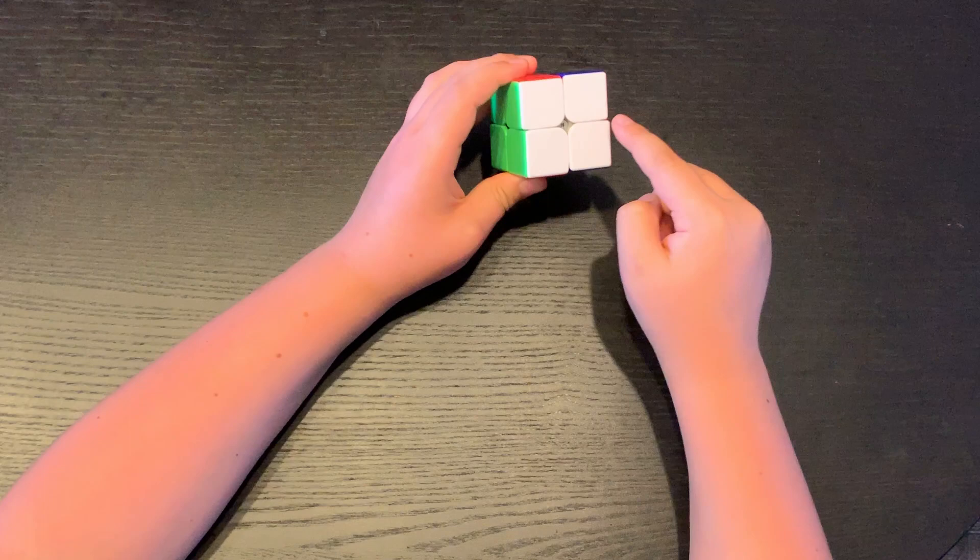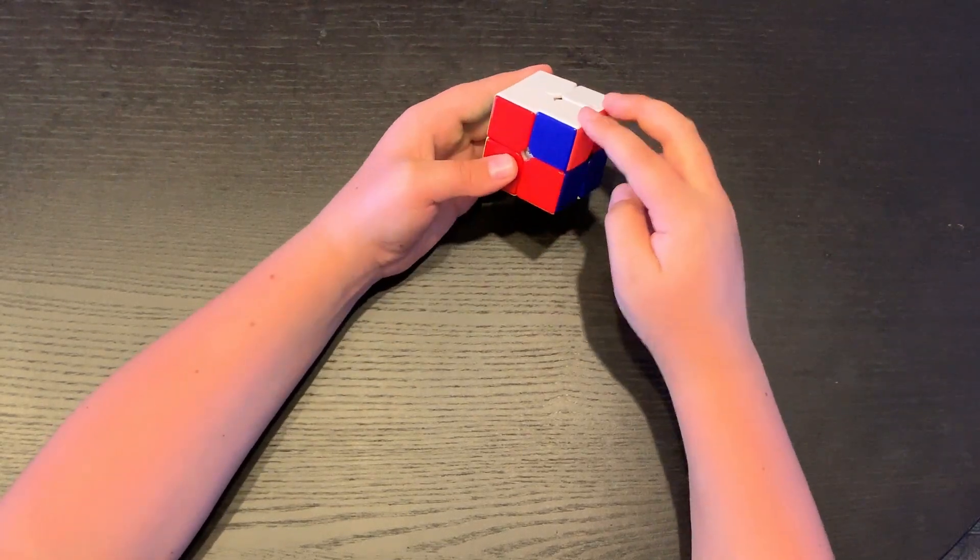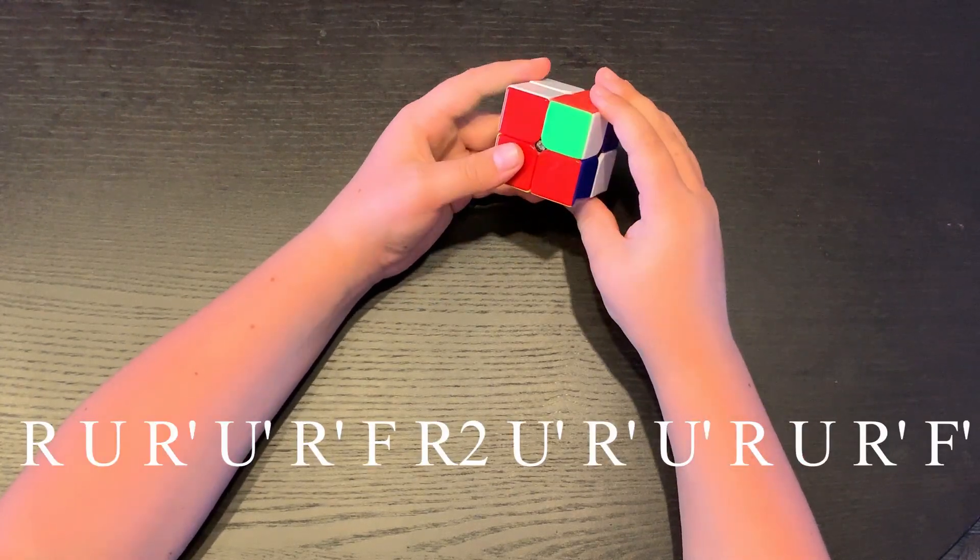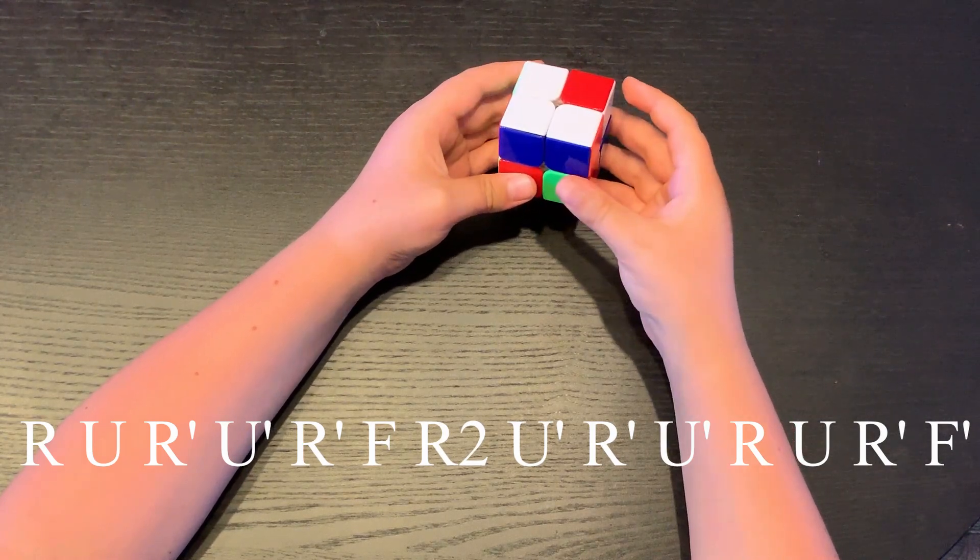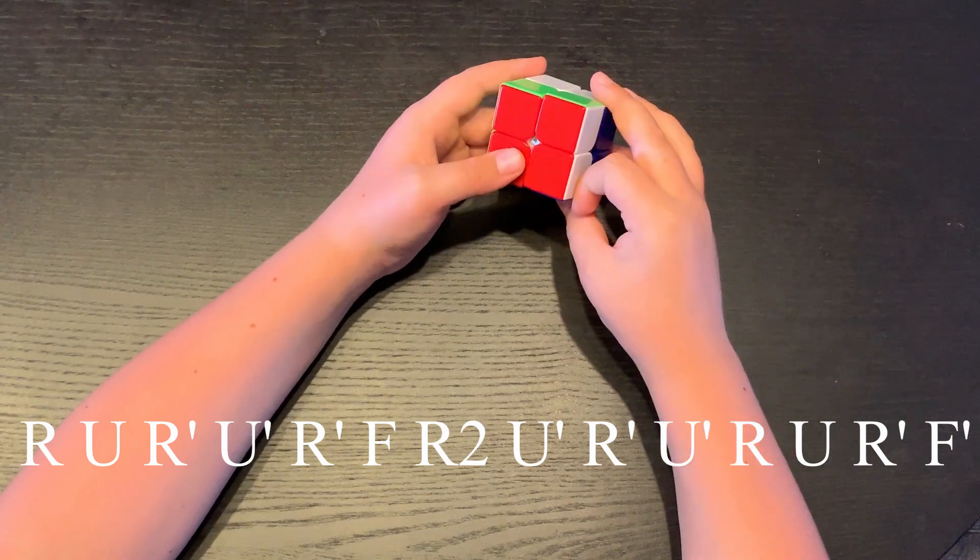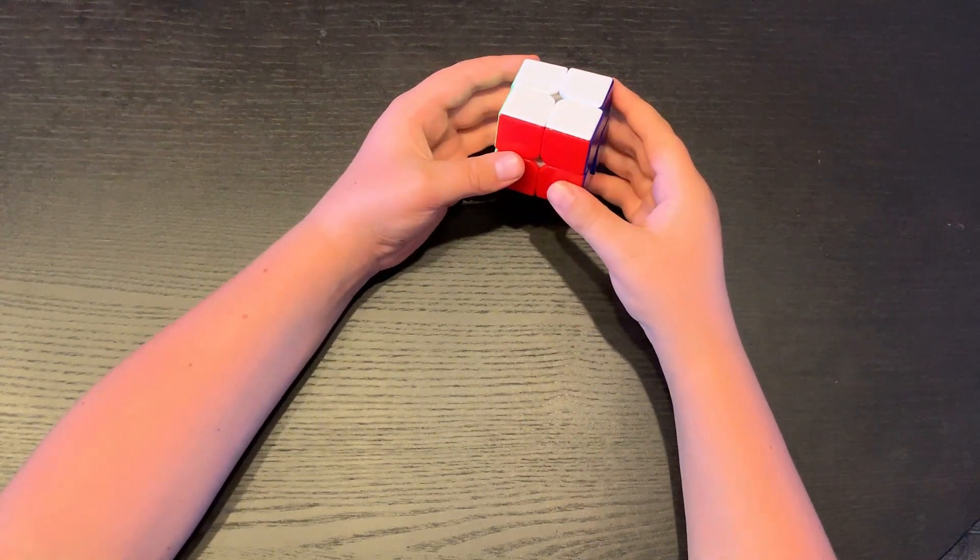But on a two you just have to switch these two corners. So to switch these two corners around, you have to do R U R' U' R' F R2 U' R' U' R U R' F'. That's the T perm.